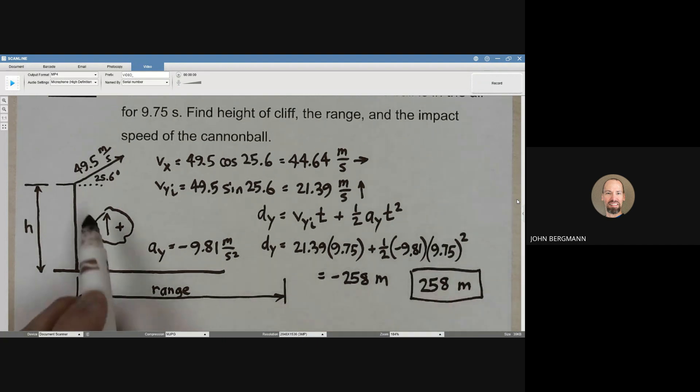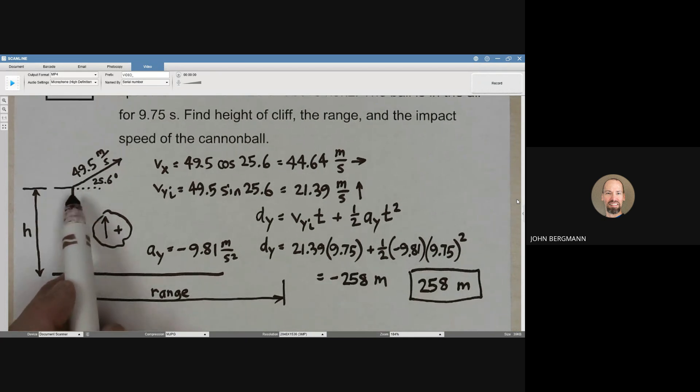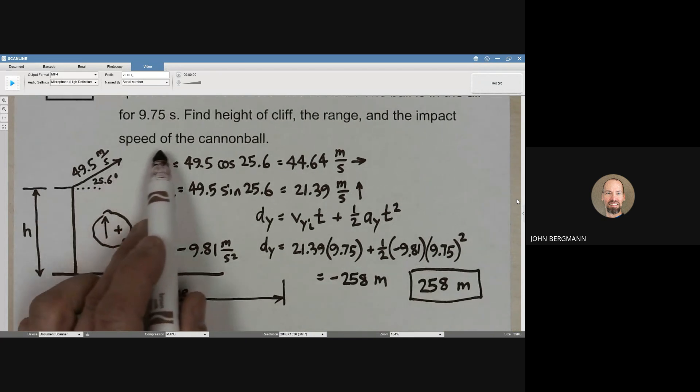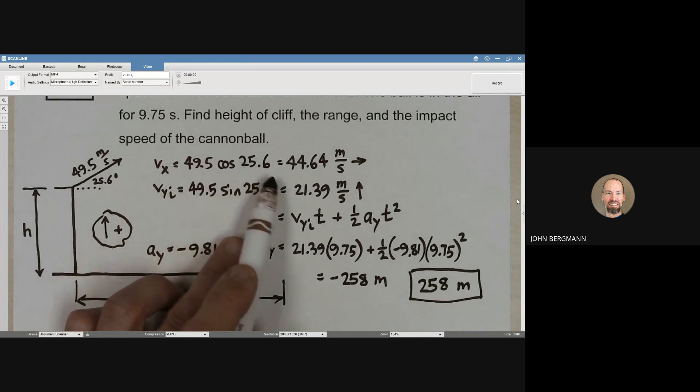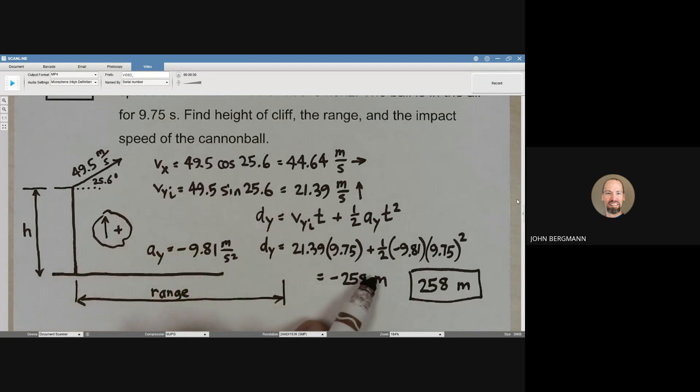This cannonball, see on the left side of the screen, it goes up. Then it comes down. And it's in the air for 9.75 seconds. And in that 9.75 seconds, the amount that its elevation has changed by is 258 meters. It's 258 meters below where it was. Well, that, therefore, is the height of the cliff.